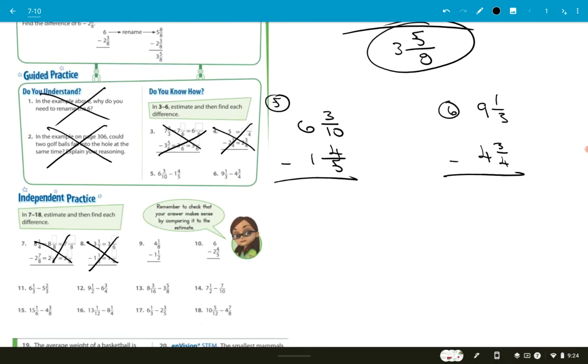Let's do a couple more. I'm looking at number 5. Mr. Moyers, we've got 6 and 3 tenths, and we're subtracting 1 and 4 fifths. First off, we need, just like if we were adding, we need to get a common denominator. Mr. Moyers, what would you use? 10. Yeah, I would use 10 also. So Mr. Moyers, 10 goes into 10 how many times? 1. And 1 times 3 is 3. So that stays the same. Mr. Moyers, 5 goes into 10 how many times? 2. And 2 times 4 is 8.